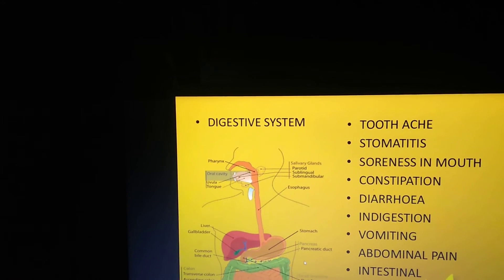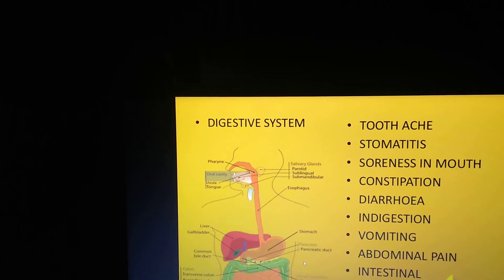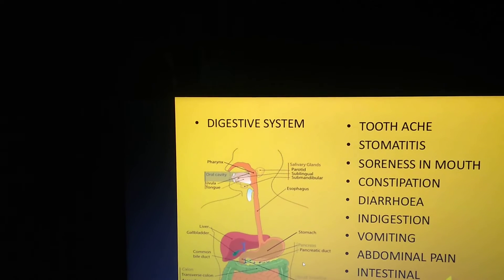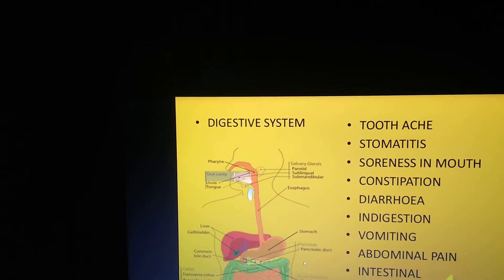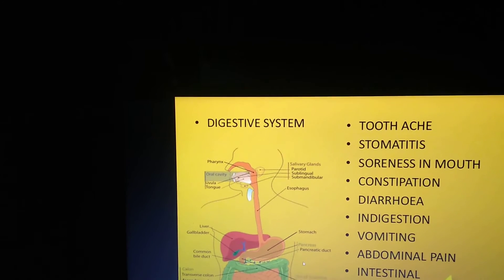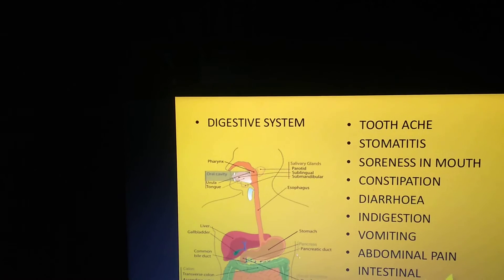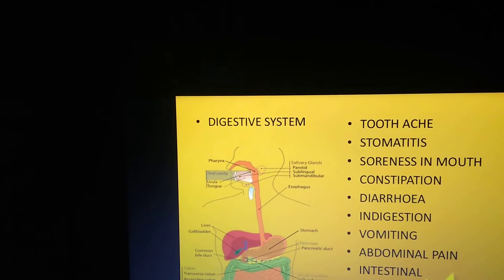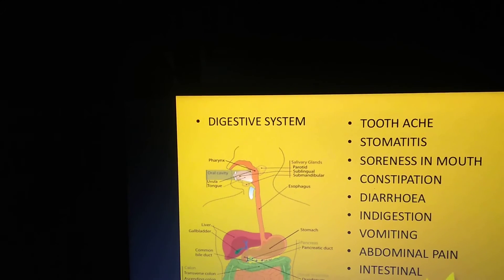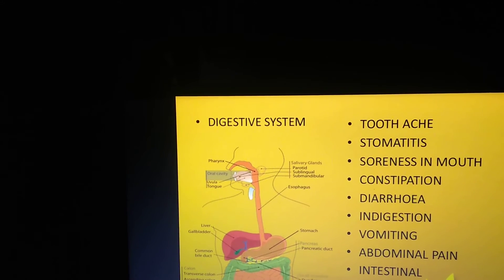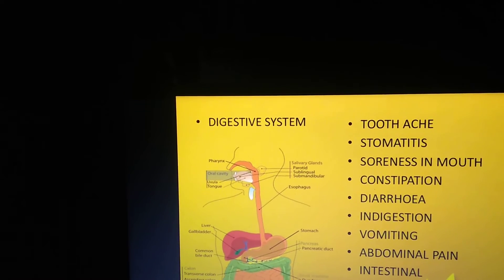In the digestive system, soreness in the mouth or stomatitis, as well as diarrhea and indigestion — these are all minor illnesses which come under your systemic minor ailments.